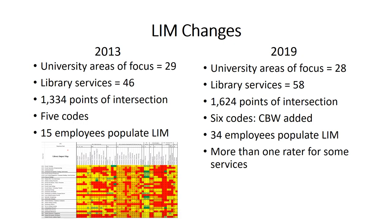Now I'd like to discuss some of the changes we made to the library impact map between 2013 and 2019. We examined the university areas of focus and eliminated one because it was no longer relevant. Library services were also examined and increased from 46 to 58. In some instances, previous library services designated as a single service, such as library IT services, were subdivided into different services, so that in 2019 what was one library service was now four for library IT.